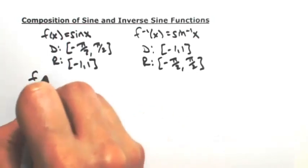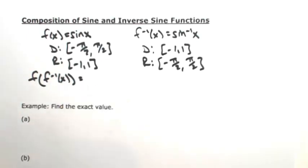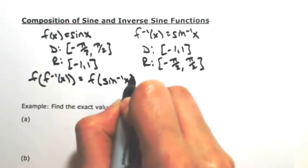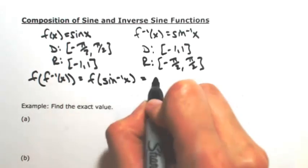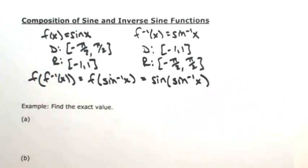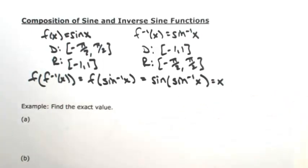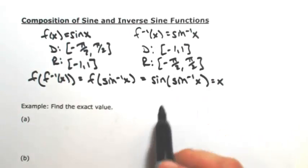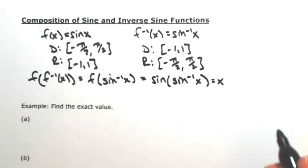So let's do f composed with the inverse. Just doing a simple substitution, this means f of the inverse sine of x. Placing that inverse sine as my input into f, we would have sine of inverse sine of x. Since these are inverses, they would just undo each other, giving me back x, as long as the domain is satisfied — that x has to be in the domain of the inverse, which is between negative 1 and 1.